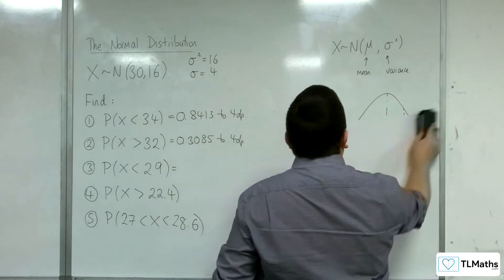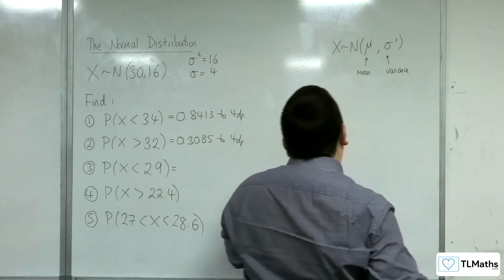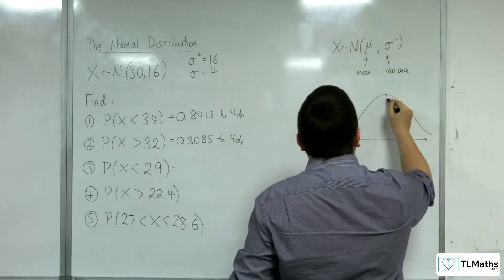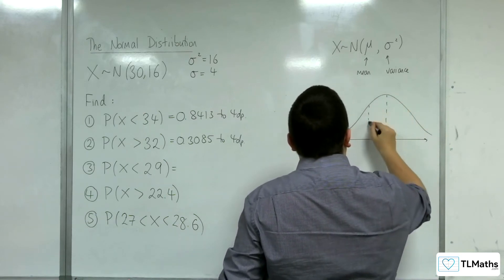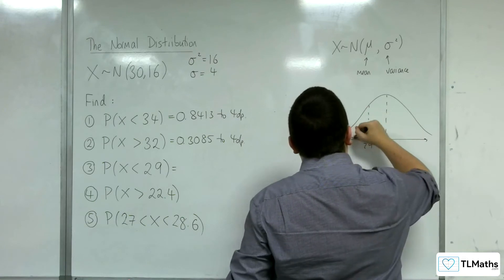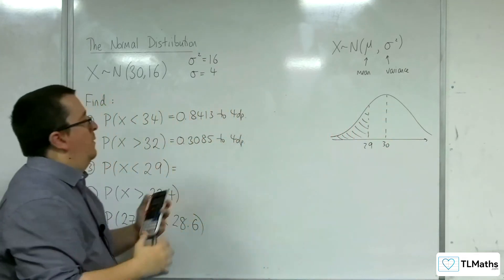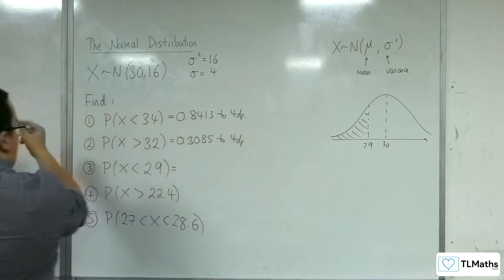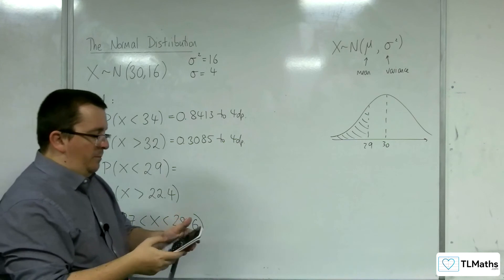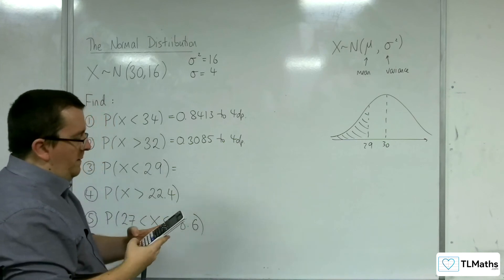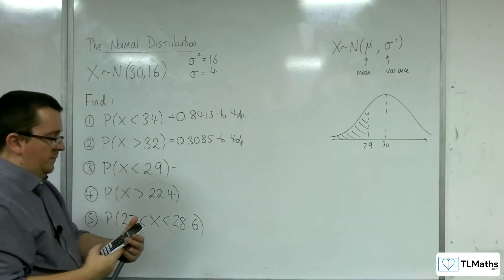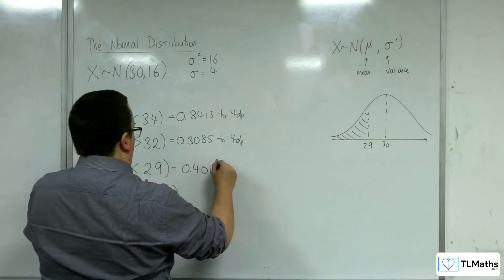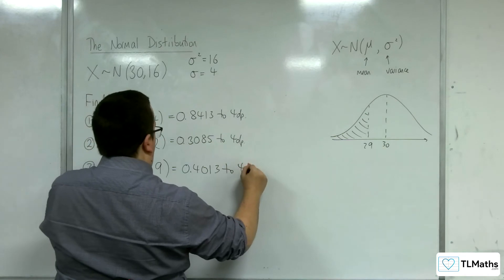Right, less than 29. Okay, right, well, going back into the menu, the lower value is now all the way down there. So I'm going to use minus 1000 like I did in question number 1. The upper value is now 29. So we should get 0.4013 to 4 decimal places.